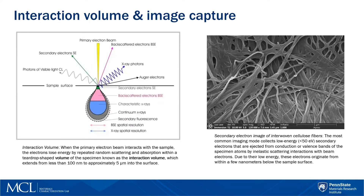The diagram on the left here shows an interaction volume. When the primary electron beam interacts with the sample, the electrons lose energy by repeated random scattering and absorption within the teardrop-shaped volume of the specimen, known as the interaction volume, which extends from less than 100 nanometers to anywhere up to 5 microns into the surface, depending on the accelerating voltage and the materials under analysis.